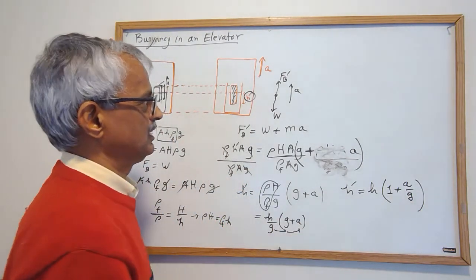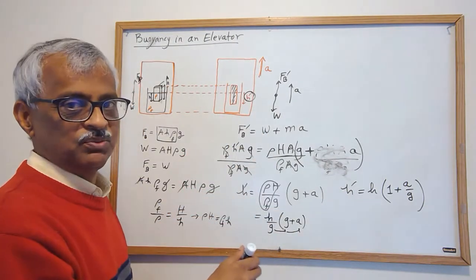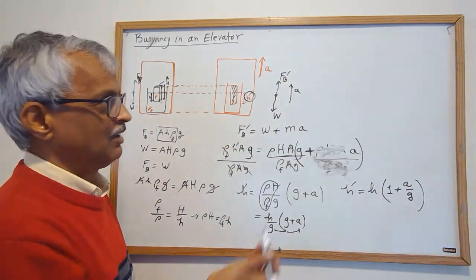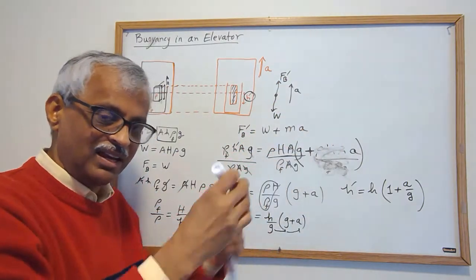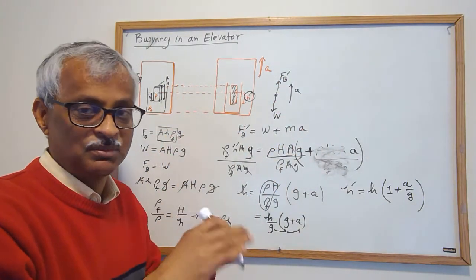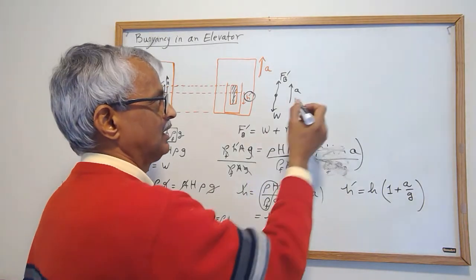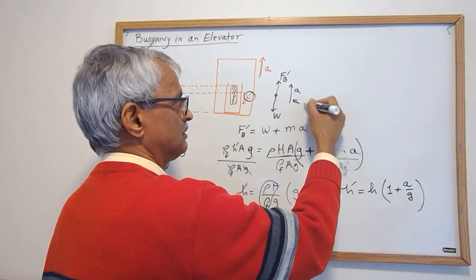So it's actually more than before. If a is going up — if a was going down, right, if a was pointed down, it's not the elevator is going up, it's the acceleration, not the velocity. This is the direction of the acceleration.